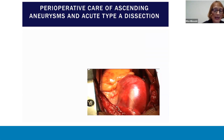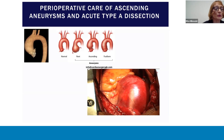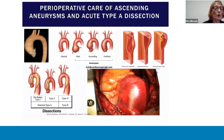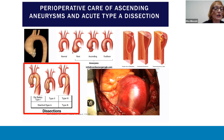Ascending aortopathies can involve the root, the ascending aorta, or both in a fusiform pathology. The primary risk of ascending aortopathies is an aortic dissection or intramural hematoma. There are two nomenclature systems for dissections. Dissections that include the proximal aorta are classified as Stanford type A or DeBakey I and II, and dissections that include the distal descending only are classified as Stanford B or type III DeBakey dissections.